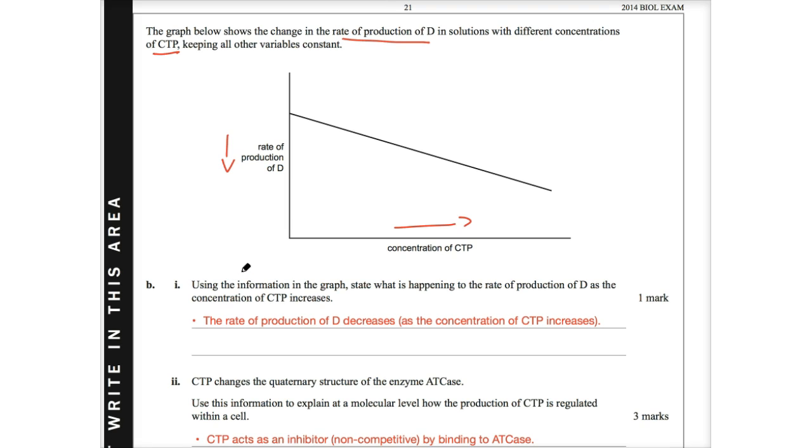So I says, using the information in the graph, state what is happening to the rate of production of D as the concentration of CTP increases. So again, it's just a graphical interpretation. And essentially, we see the rate of production of D decreases as the concentration of CTP increases. So a very simple statement, the rate of production D decreases. In the examination report, that is what they give. I've just put in brackets as the concentration of CTP increases just to full completion. Perfect.